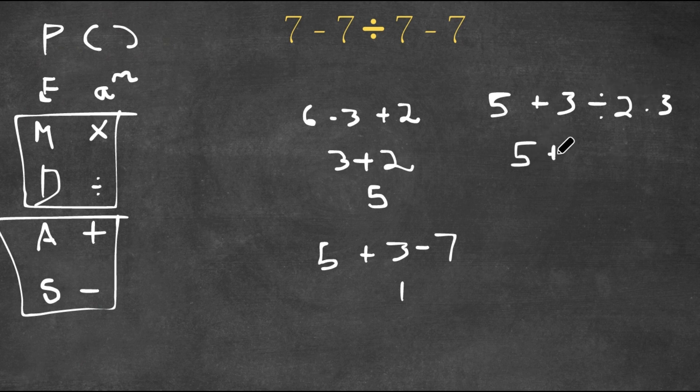And now I have multiplication, so now I do 3 over 2 times 3, which is 9 over 2, and then I would add the 5.